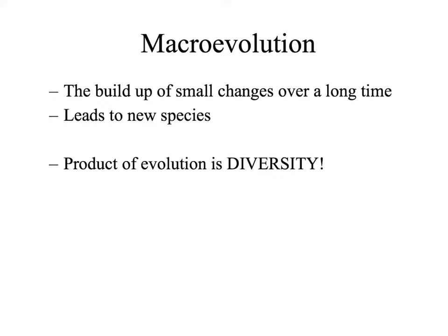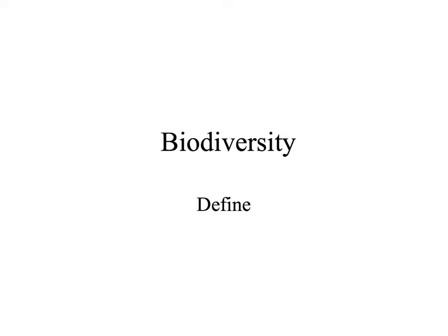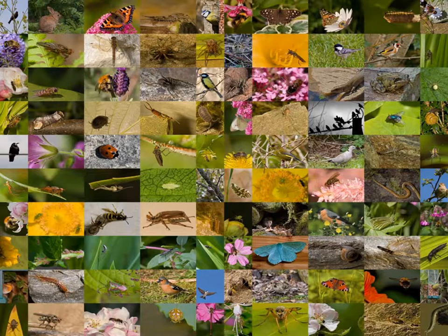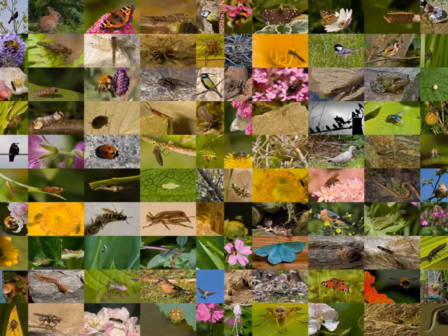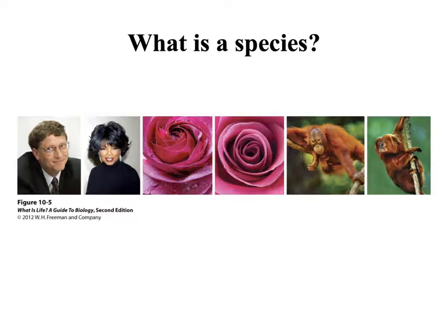The process of macroevolution leads to brand new species — this is where we get our diversity of life. Macroevolution produces biodiversity, which refers to the different types of living organisms we see around the globe. Biodiversity is huge: there are 1.8 million species named and identified so far on Earth, and it is estimated that there are as many as 10 million living organisms out there. The smallest unit of biodiversity is a species.